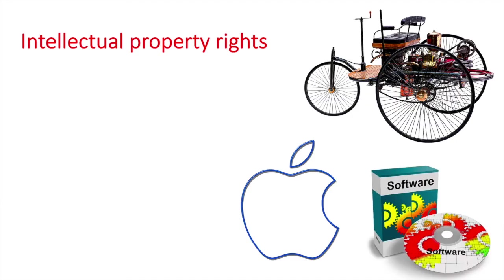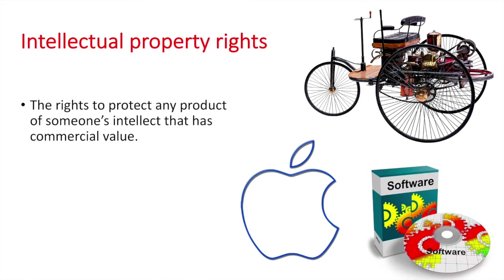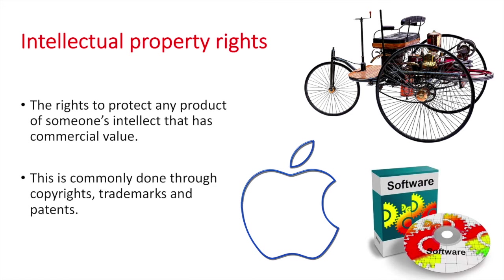Intellectual property rights allow for the protection of products of the intellect that have commercial value. This is commonly done through copyrights, trademarks, and patents. Copyrights protect products such as software, which have been developed by companies in order to sell for a profit. If no copyright protection exists, there is less incentive to create software.